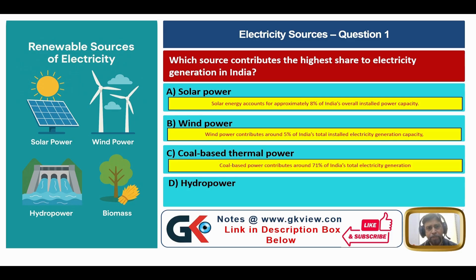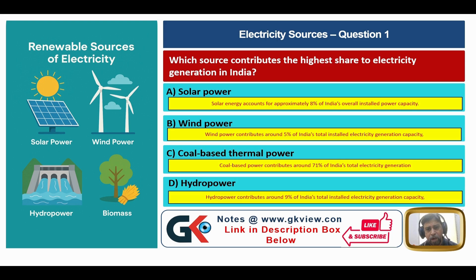Coal-based power contributes around 71% of India's total electricity generation. Hydro power contributes around 9% of India's total installed electricity generation capacity. So you know the answer — the answer is C, that is coal-based thermal power.